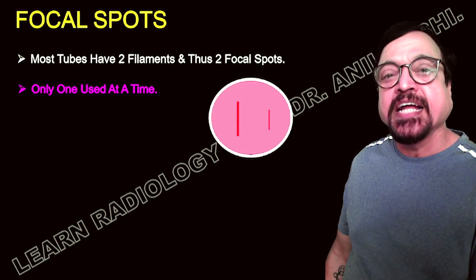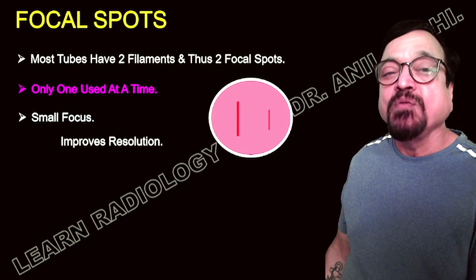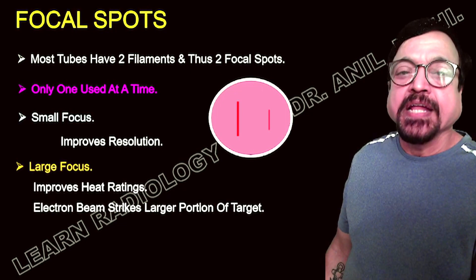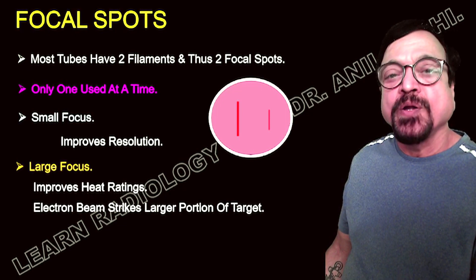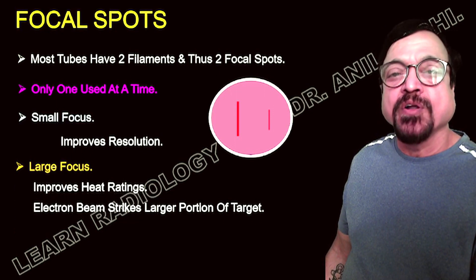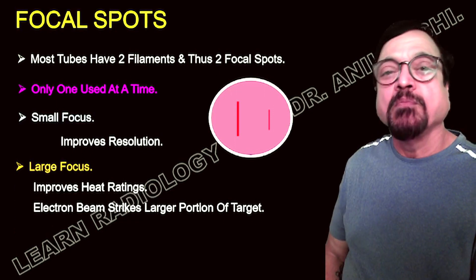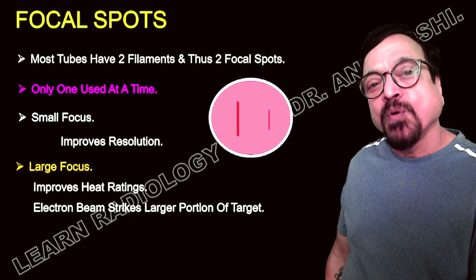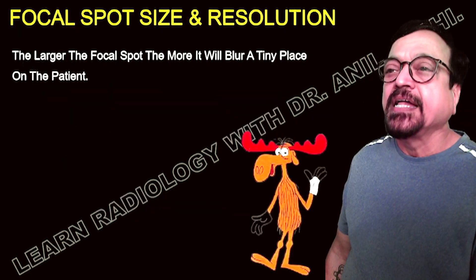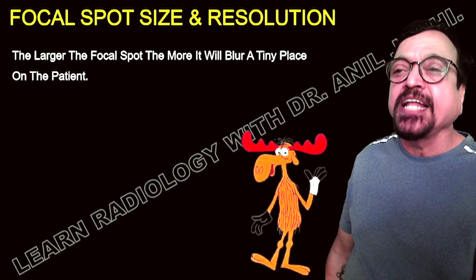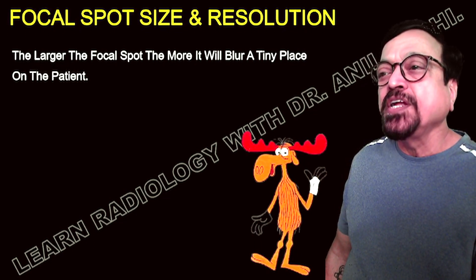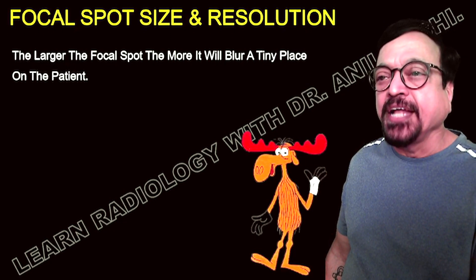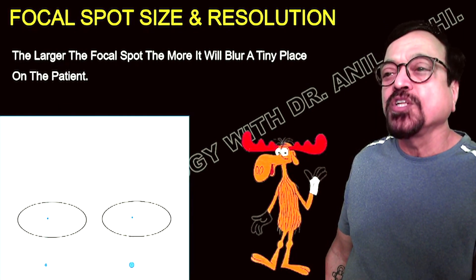A small focal spot gives a sharp image but cannot handle high mA. The large focal spot can handle high mA and longer exposures but gives a less sharp image. Only one focal spot is used at a time — either small or large, not both simultaneously. When you want good resolution you select the small focal spot, but you will need to use more seconds since more mA cannot be used. The large focal spot uses more mA and allows longer exposures but is less sharp.